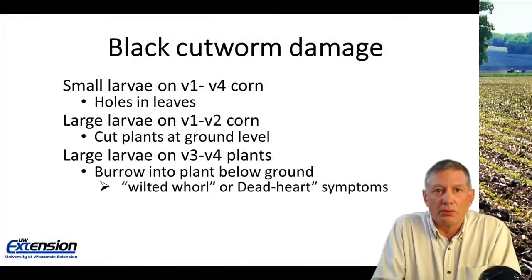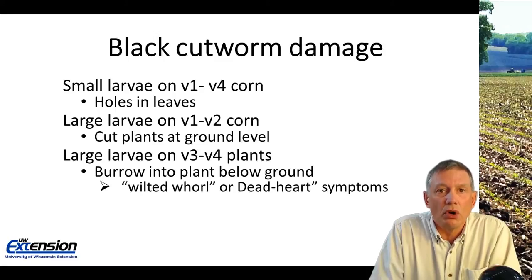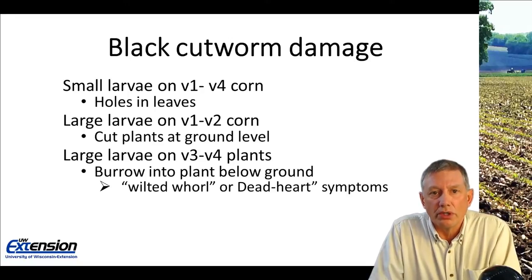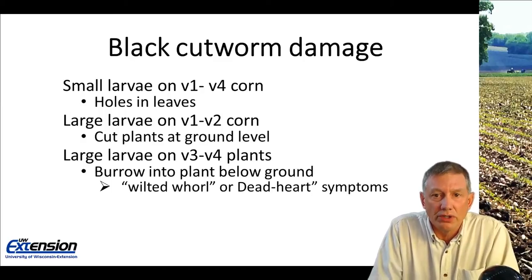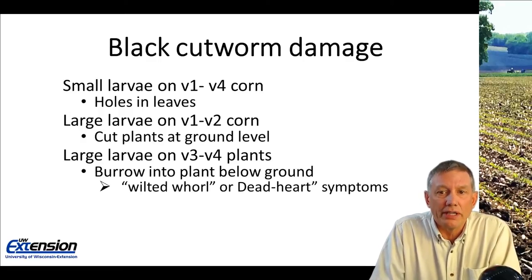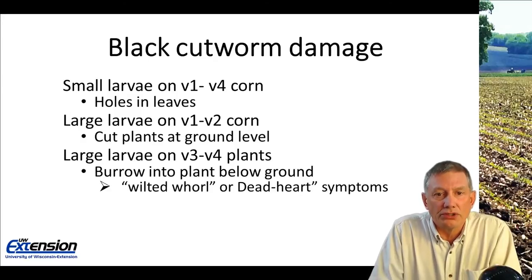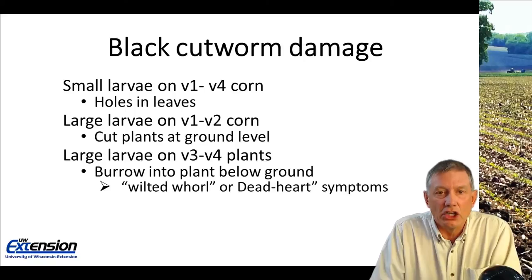What is identifiable with black cutworms is the type of damage. Small larvae on anywhere from V1 to V4 corn will chew small holes in the leaf. Larger larvae on V1 to V2 corn will cut plants at ground level. And finally, larger larvae on V3 to V4 plants will burrow into that corn plant below ground. Your above-ground symptoms will be what some people call wilted whorl symptoms, and others dead heart — basically the emerging leaves from the whorl are wilted.